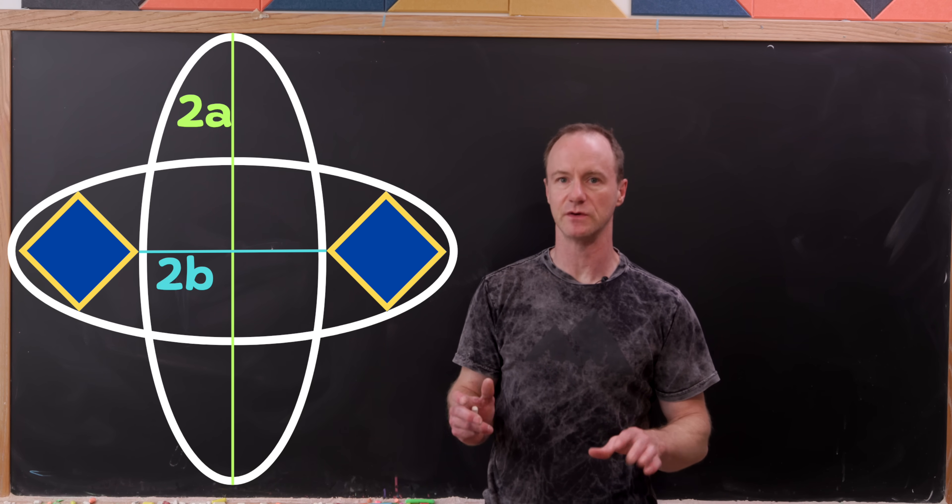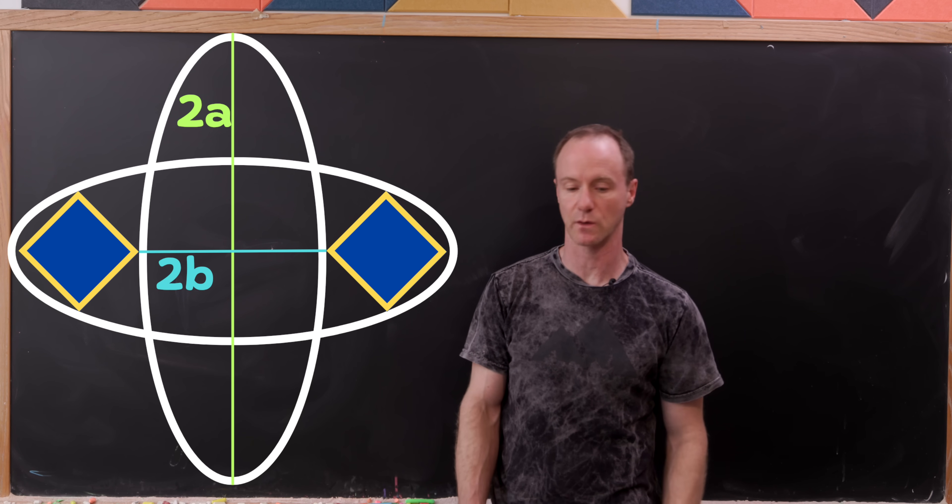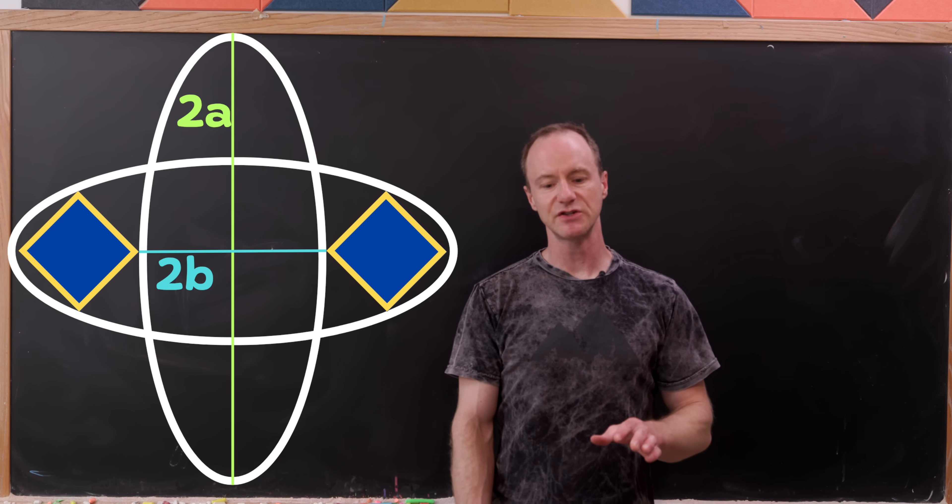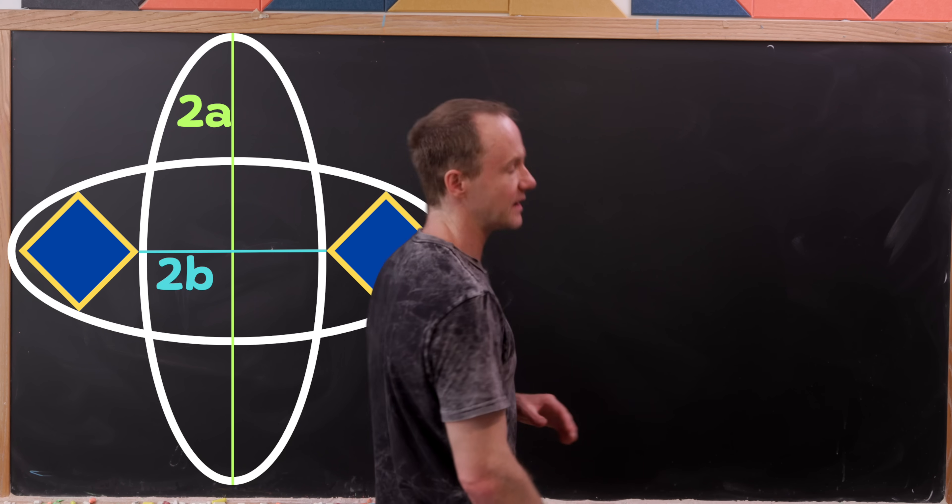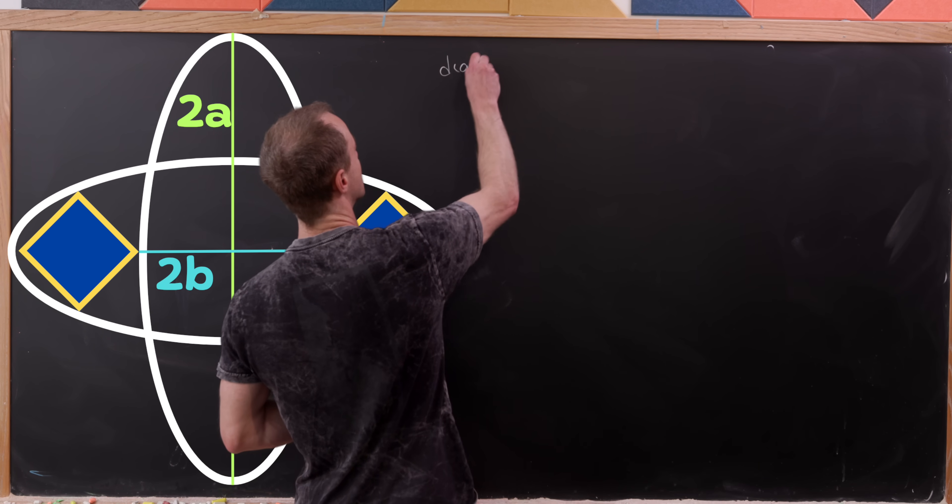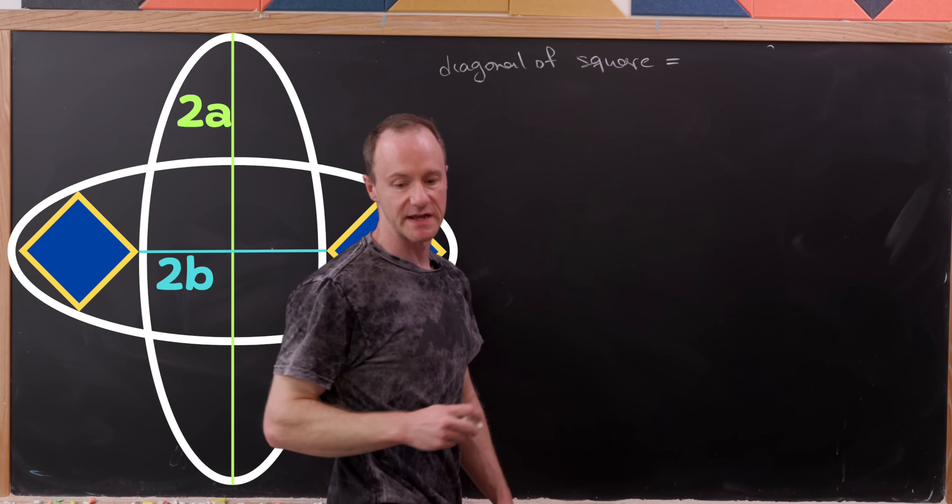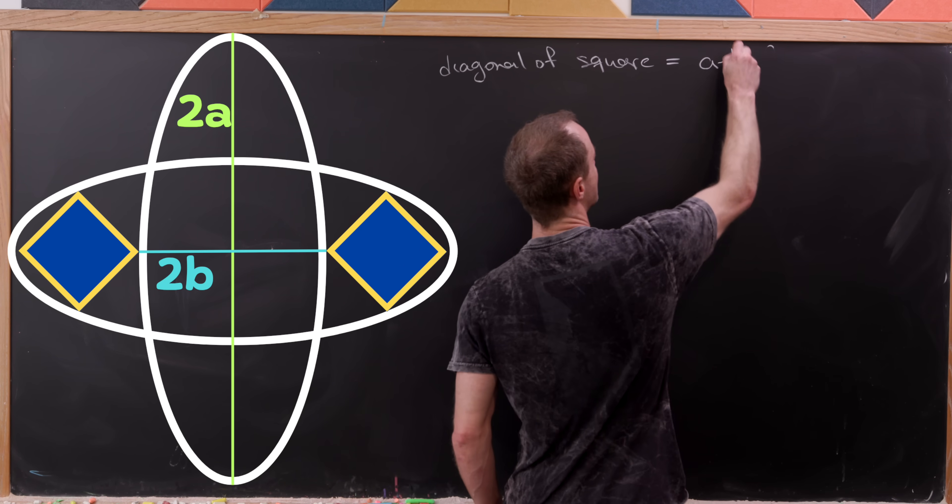I guess they're the same square, so all we have to do is find the side length of one of the squares. I'd like to observe really quickly that the diagonal of the square is pretty clearly A minus B.